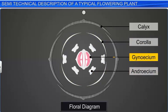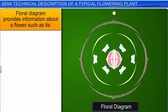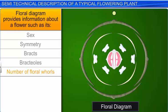The floral diagram presents information about a flower, such as its sex, symmetry, bracts, bractioles, the number of floral whorls, the calyx, corolla, androecium, and gynoecium.